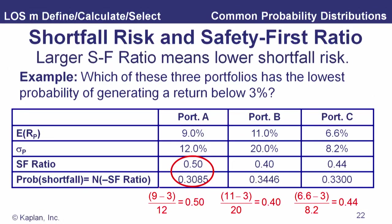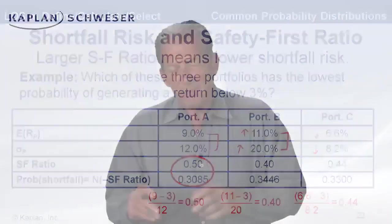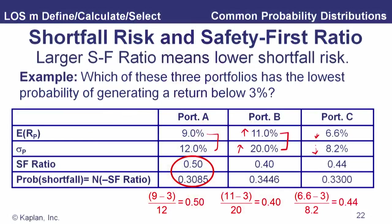A larger safety first ratio means lower shortfall risk. We've got three portfolios here. Portfolio A has an expected return of 9% and a standard deviation of 12%. Portfolio B has an expected return of 11% and a standard deviation of 20% — higher expected return but also higher risk. Portfolio C has a lower expected return but also lower risk. When choosing among portfolios, we previously used the coefficient of variation and the Sharpe ratio; now we're going to use this third method, the safety first ratio.